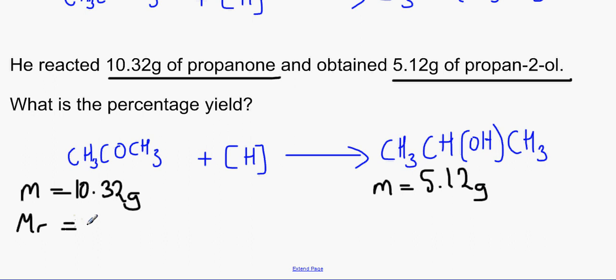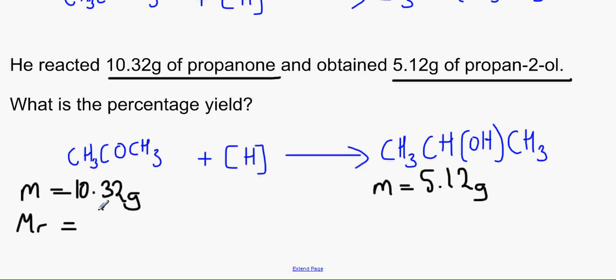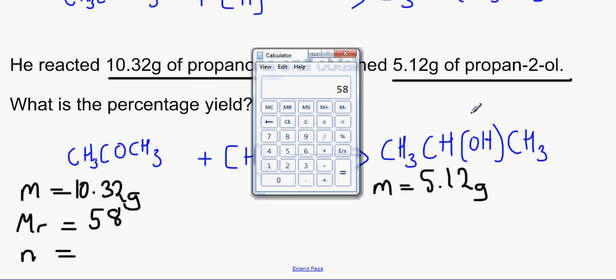We know the mass of this is 5.12 grams. We can find out what the molar mass is by adding together the molar mass of each element in propanone. So it's going to be 12 for carbon plus 3 for hydrogen plus 12 for carbon plus 16 for oxygen plus 12 for carbon plus 3 for hydrogen, and we would end up with 58.